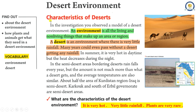Desert Environment. Characteristics of Deserts. In the investigation you observed a model of a desert environment. An environment is all the living and non-living things that make up an area or region. A desert is an environment where there is very little rainfall. Many years could even pass without a desert getting any rainfall. In summer it is very hot in daytime, but the heat decreases during the night. In the semi-desert areas bordering deserts, rain falls every year, but the amount is not much more than what a desert gets, and the average temperatures are also similar. About half the area of Kurdistan region Iraq is semi-desert. Kirkuk and south of Erbil Governorate are semi-desert areas.